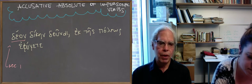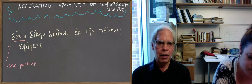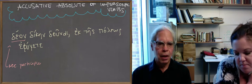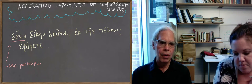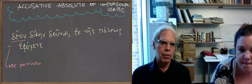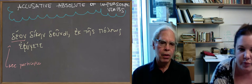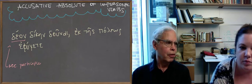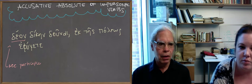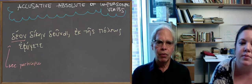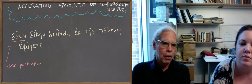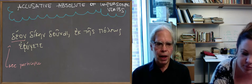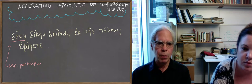So in the example sentence, δέον δίκην δοῦναι, ἐκ τῆς πόλεως ἔφυγατε, there's no grammatical connection between the two parts, and how are we going to translate it? Since it is necessary, or it being necessary to pay the penalty, ἐκ τῆς πόλεως ἔφυγατε, you fled from the city-state. No grammatical linking, and δέον is the accusative absolute. So you see this often with δέον, you also see it often with the neuter accusative singular participle of ἔξεστι, another verb in this lesson, which means it is possible.